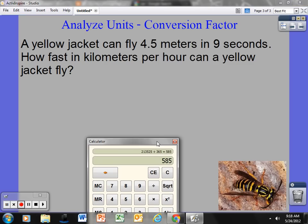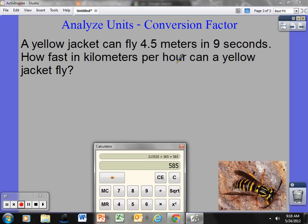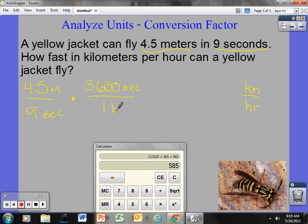Last one. A yellow jacket can fly 4½ meters in 9 seconds. How fast in kilometers per hour can a yellow jacket fly? Originally I'm going from 4½ meters to 9 seconds, so there's my first comparison: 4½ meters in 9 seconds. Now I want to convert that into kilometers per hour. I can either choose to get rid of the meters or the seconds, and I need to convert seconds to hours. I'm going to just do seconds first because I know that there are 3,600 seconds in one hour. Seconds cancel, so I have now had my hours, so I'm good with that.